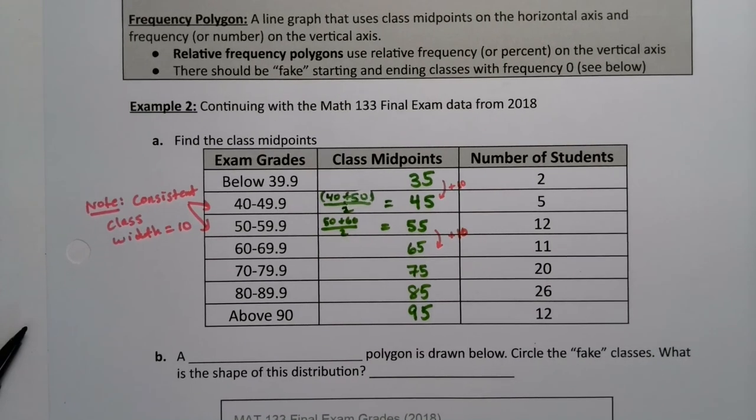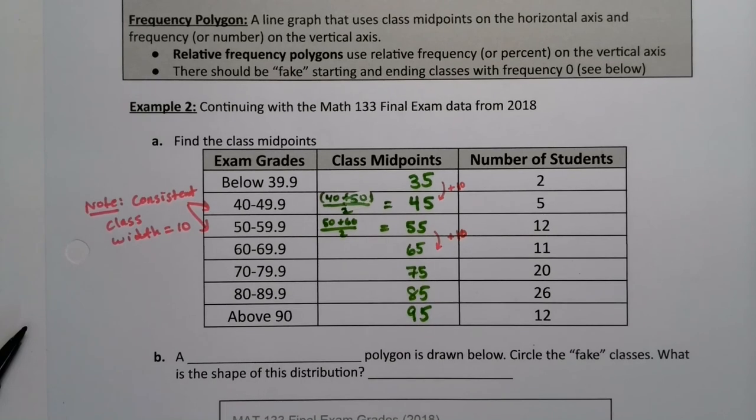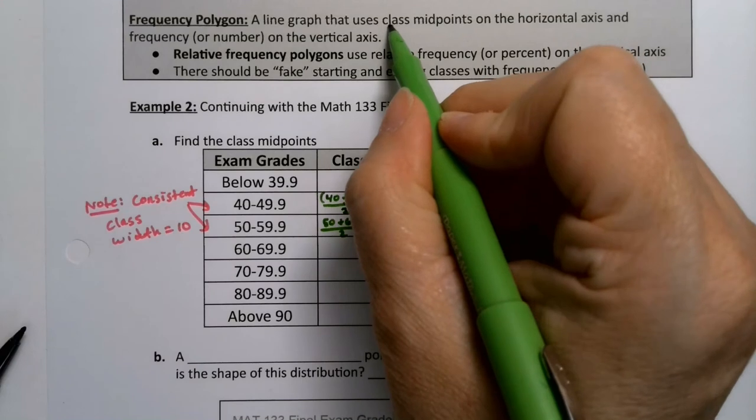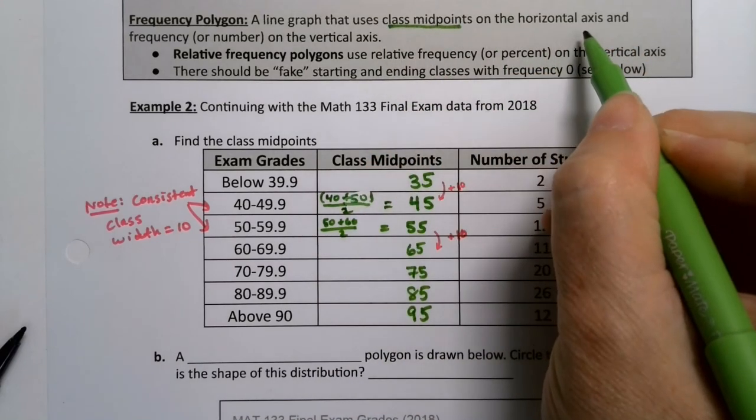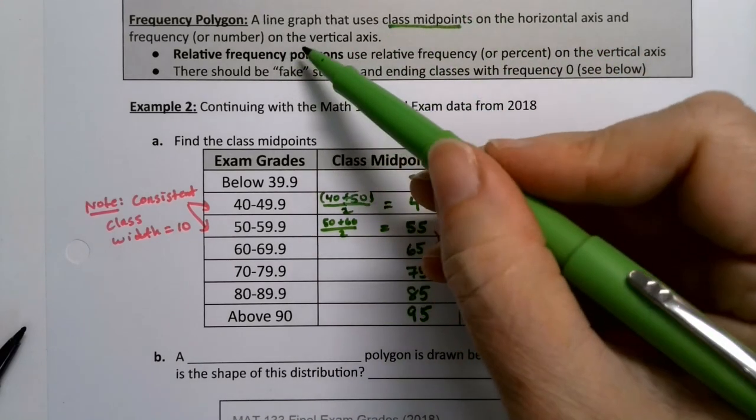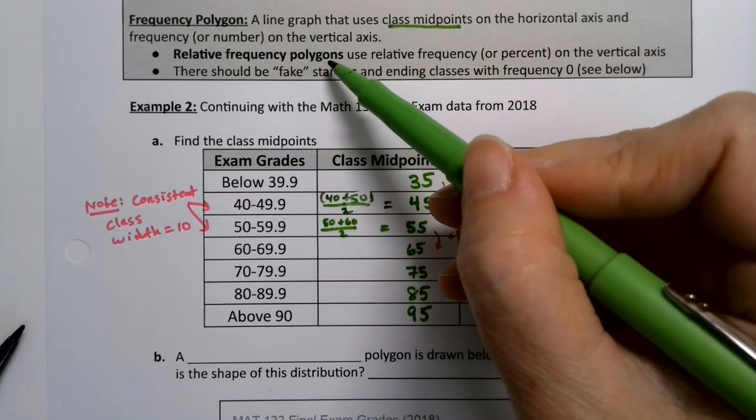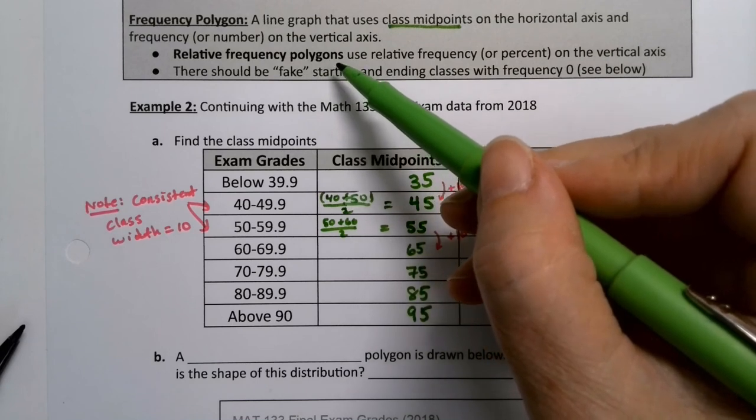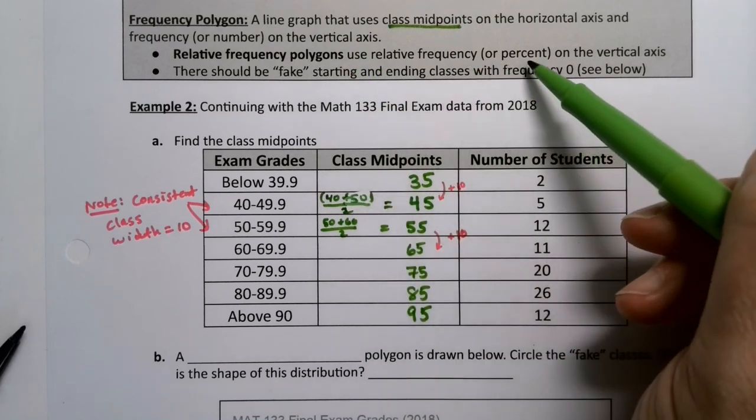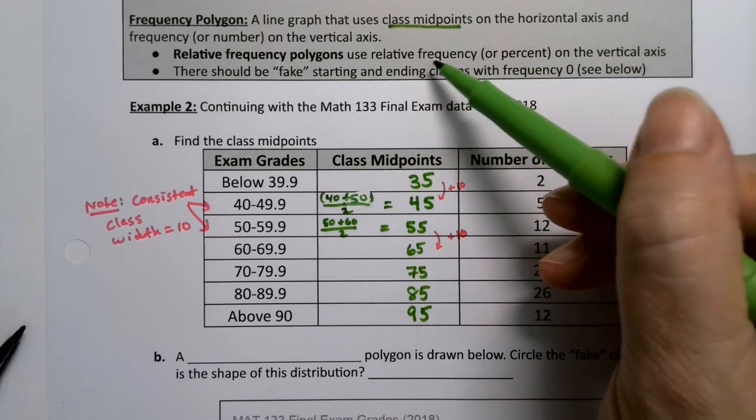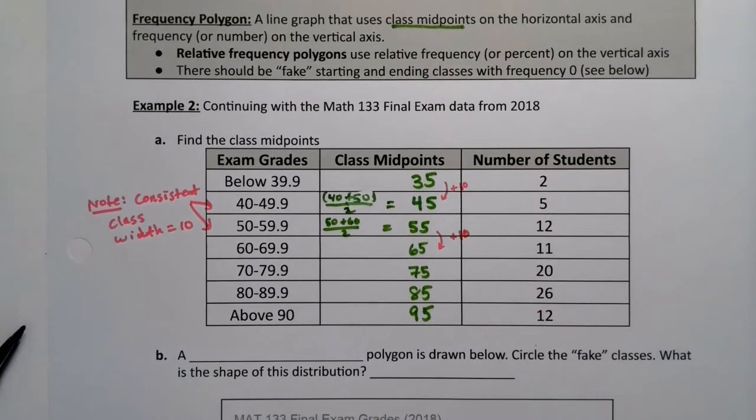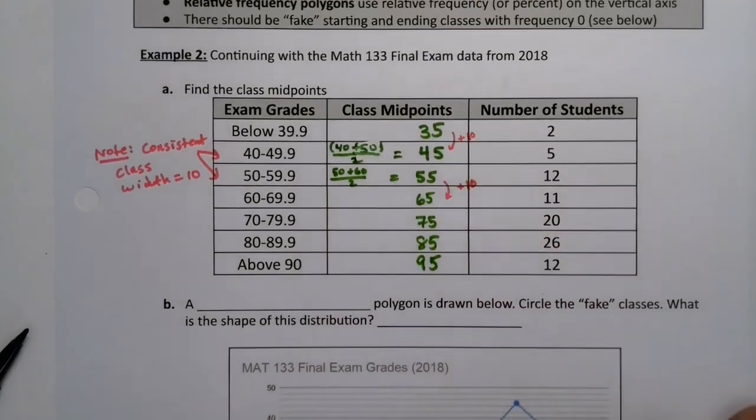Now, what's a frequency polygon? A frequency polygon is a line graph that uses those midpoints. So those class midpoints are on the horizontal axis. And the frequencies, or technically you could do it with relative frequency, and then it becomes a relative frequency polygon. You can also do it with percents. But percents are just a form of relative frequency. And then the weird thing is, well, let's look here.